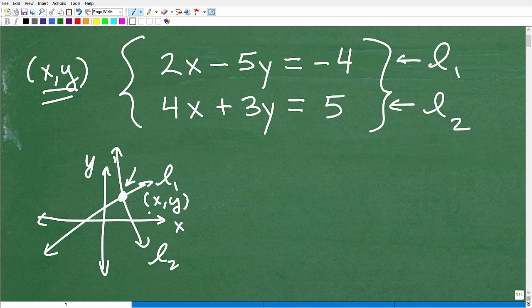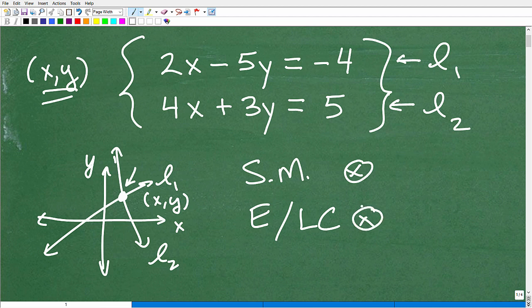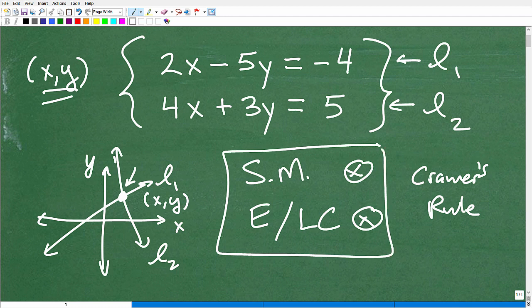The algebraic ways of solving this system, which we really need, is something called the substitution method or the elimination or what we call a linear combination method. These are the big tools that we're going to be using. You've got to know how to do both. The substitution method and elimination or linear combination method, they go by both names. This is primarily the main ways we're going to be solving these systems.